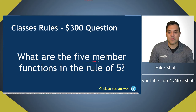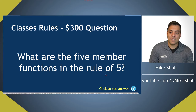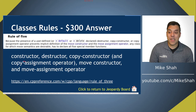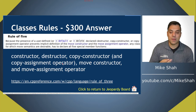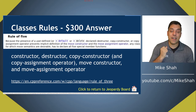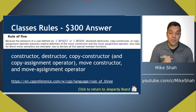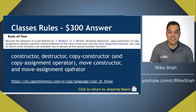For 300: what are the five member functions in the rule of five? We have the constructor, destructor, copy constructor, copy assignment operator, move constructor, and move assignment operator. The rule of five typically applies when you define a move constructor — that means you probably need the move assignment operator and must define all the other special member functions as well.